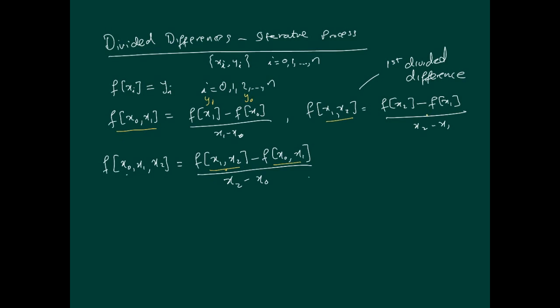I'll show you in a tabular way how we can very easily calculate these. Another example: f[x1, x2, x3] equals f[x2, x3] minus f[x1, x2], divided by x3 minus x1. Similarly, you could calculate f[x2, x3, x4], then f[x3, x4, x5], and so on — depending on how many data points we have.